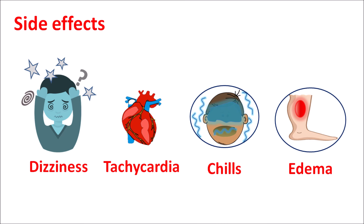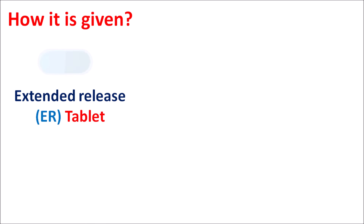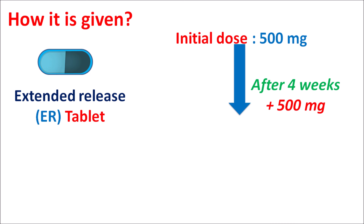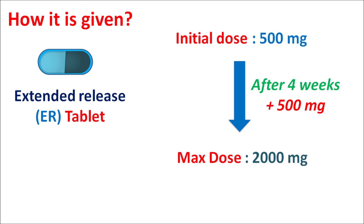Other side effects include dizziness, tachycardia due to reflex action, chills, excessive sweating, and peripheral edema. Regarding dosage, niacin is given as an extended-release tablet — though normal tablets are also available, extended-release formulations cause less flushing and improve patient compliance. The initial dose is 500 mg, maintained for 4 weeks, after which the dose is slowly escalated every 4 weeks. The maximum dose is 2000 mg.